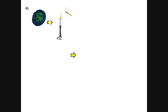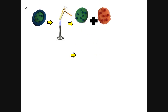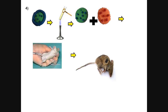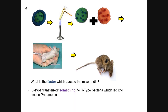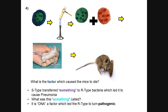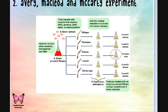He then did one more experiment: he took R-type bacteria and mixed it with heat-killed S-type bacteria, then injected the mixture into mice. To his surprise, the mice died. The S-type had transferred something to the R-type bacteria which caused the avirulent R-type to become pathogenic and cause pneumonia. This something was later named as DNA, which caused the R-type bacteria to turn pathogenic. This is how a simple transfer of a gene can change the characteristics of an entire organism.